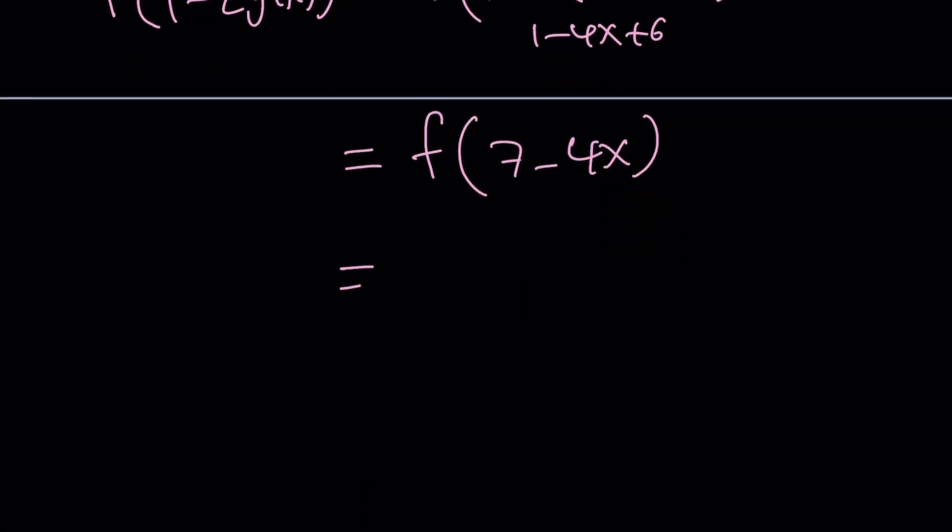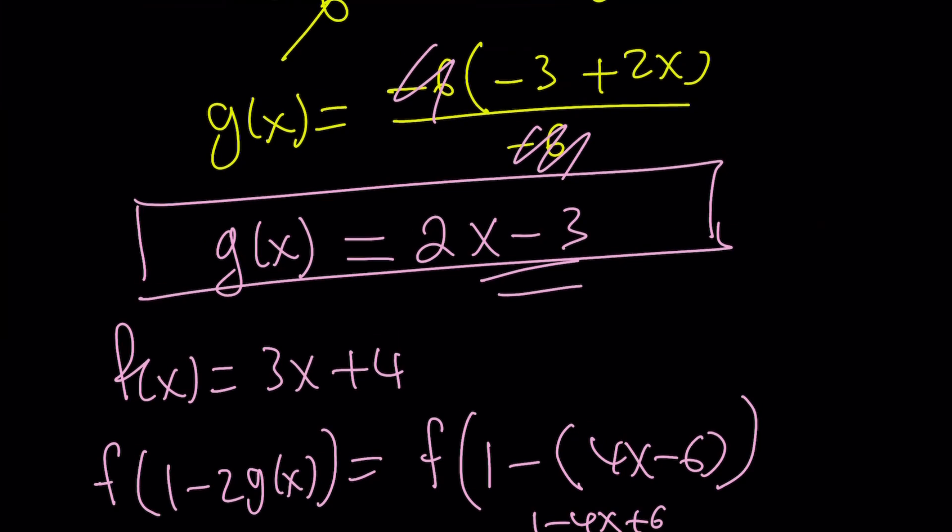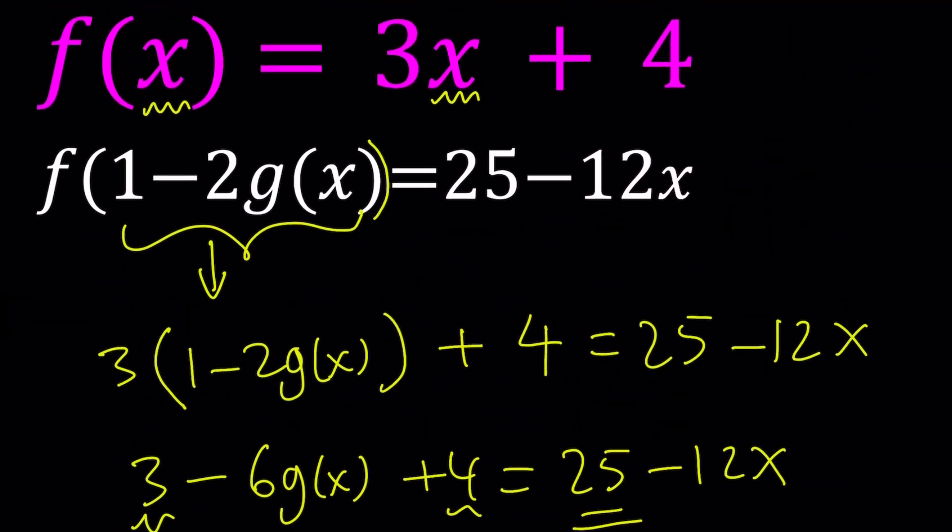And then this is going to become, because f is given, 3x plus 4, this 3 times plus 4. Distribute 21 minus 12x plus 4. And that's going to give you negative 12x plus 25. Is that the same as 25 minus 12x? Yes.